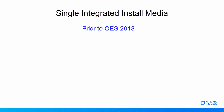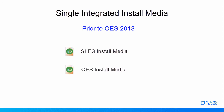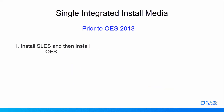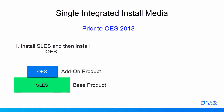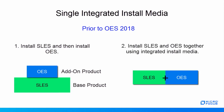Before OES 2018, three install media or ISO files were available: separate SLES install media, separate OES install media, and SLES plus OES integrated install media. Using these install media, OES was installed in two ways. First, install SLES as a base product and then install OES as an add-on product on top of SLES. Second, install SLES and OES together using integrated install media.